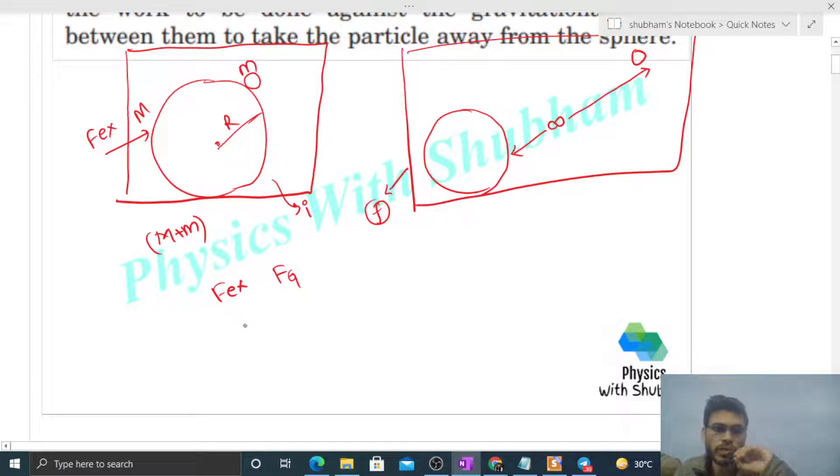Now we can use work energy theorem. It says work done by all the forces on the system, that will be change in kinetic energy of the system. Work done by external force plus work done by gravitational force of attraction, that will be change in kinetic energy: K final minus K initial. Initial kinetic energy is zero, final kinetic energy is also zero, because they don't have any velocity. Small m and capital M are at rest in the initial state and in the final state.